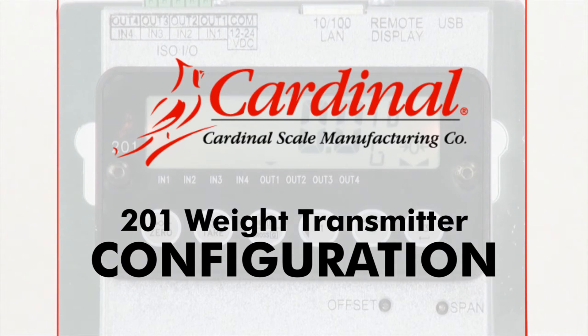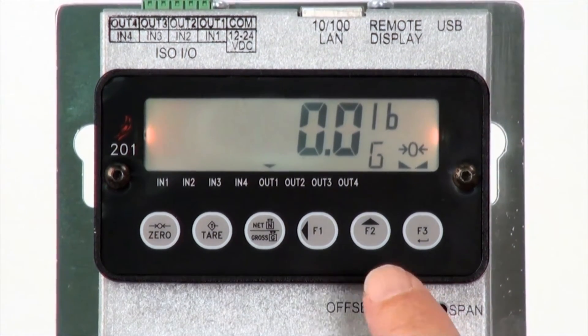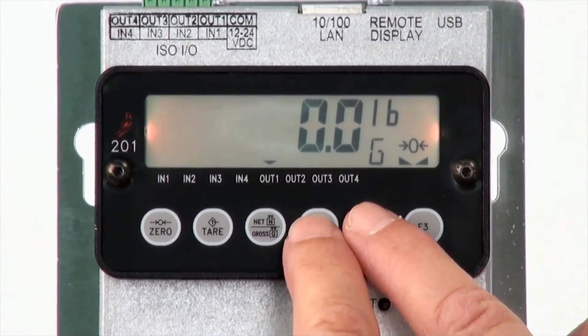This video will show you how to change the configuration settings of a Cardinal 201 DIN rail weight transmitter. To access non-metrological parameters, press the F1 and F2 keys simultaneously.